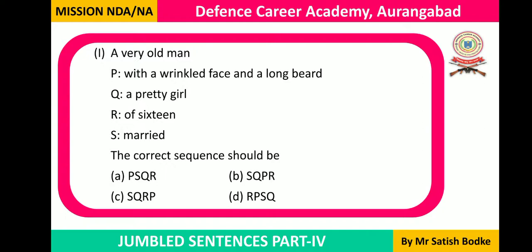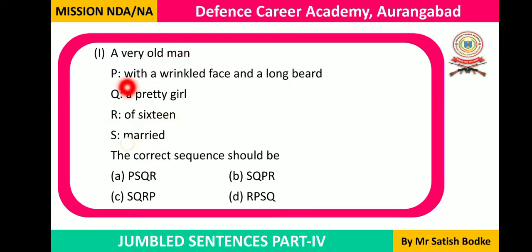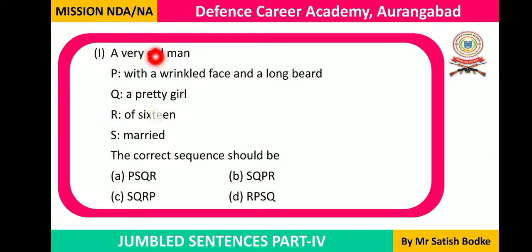This is the first question. We have five parts of a sentence. The sentence begins with 'a very old man,' which is a noun phrase used as a subject. Obviously, after the subject we use a verb. 'With a wrinkled face and a long beard' is a phrase modifying the noun 'man,' so it is also part of the subject — a very old man with a wrinkled face and a long beard.